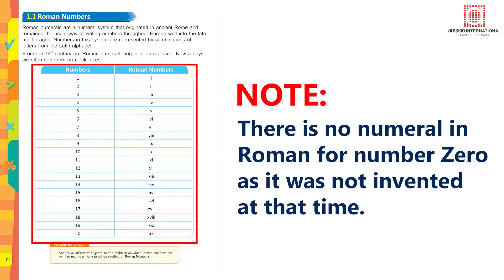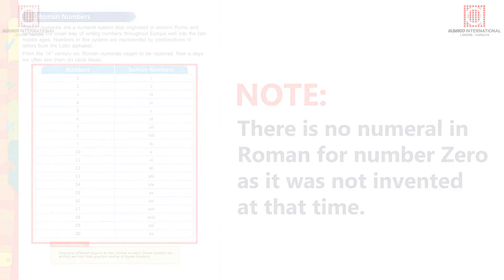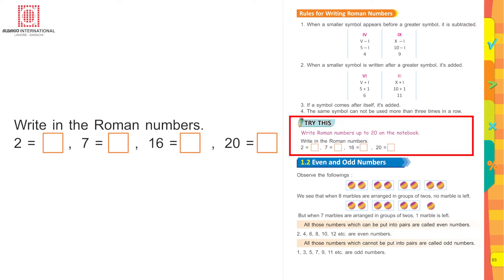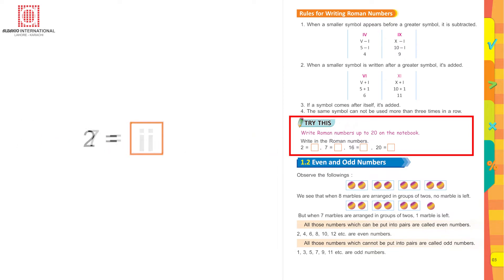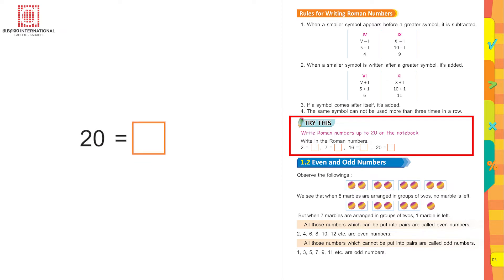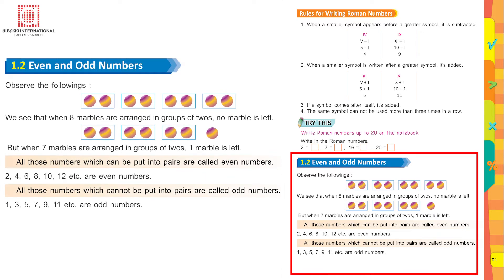There is no numeral in Roman for 0. You know why? Because at that time, 0 was not invented. So there is no numeral for 0 in Roman numerals. Write Roman numbers up to 20 in your notebook the way I have told you. For example: 2 is equal to two I's, 7 is equal to V and two I's after V, 16 is equal to XV and I. For 20, you write two X's.